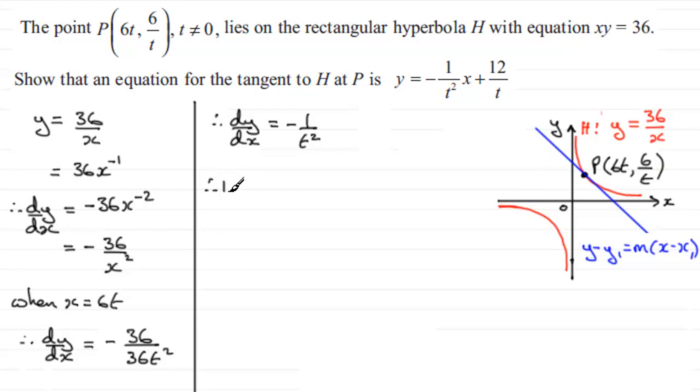The equation of the tangent at P: it's going to be y minus y₁.